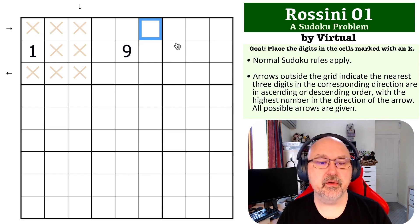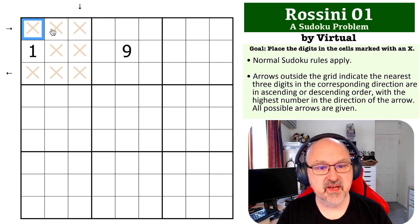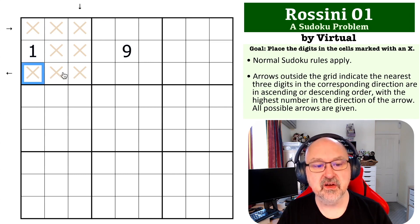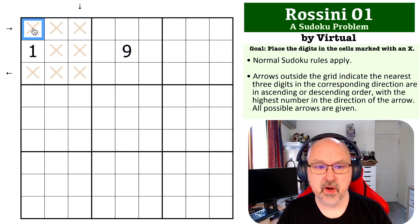Okay, so if we look at this box, what we know is that these digits must increase from here to here to here, and because of this arrow, it must continue to increase from here to here to here, and because of this arrow, it must continue to increase from here to here to here, because this arrow is pointing outwards. So we can treat this as a long thermo that can't start with a 1.